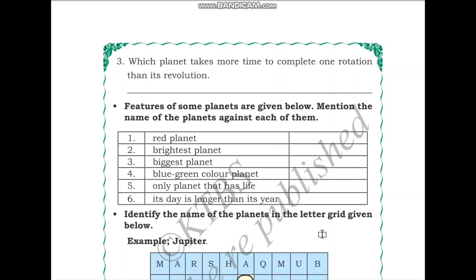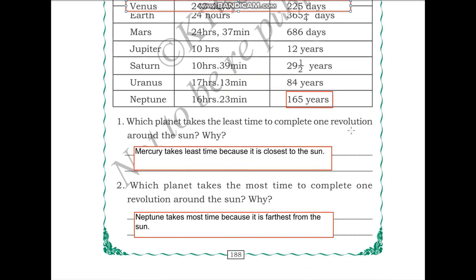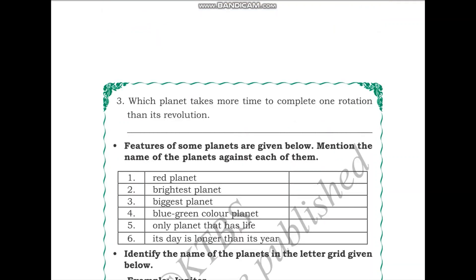Which planet takes more time to complete one rotation than its revolution? One of the planets takes longer to complete one day than to complete one year. If you look closely, Venus takes 243 days to complete one rotation, but it takes only 225 days to complete one revolution. This is because Venus spins very slowly on its axis. That is why Venus is the planet that takes more time to complete one rotation than one revolution.